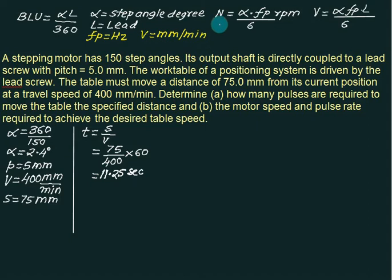Now we know that the speed is given by V equals alpha into pulse frequency multiplied by L divided by 6. So we have V equals step angle multiplied by pulse frequency multiplied by lead divided by 6. So V equals 400, alpha is 2.4.